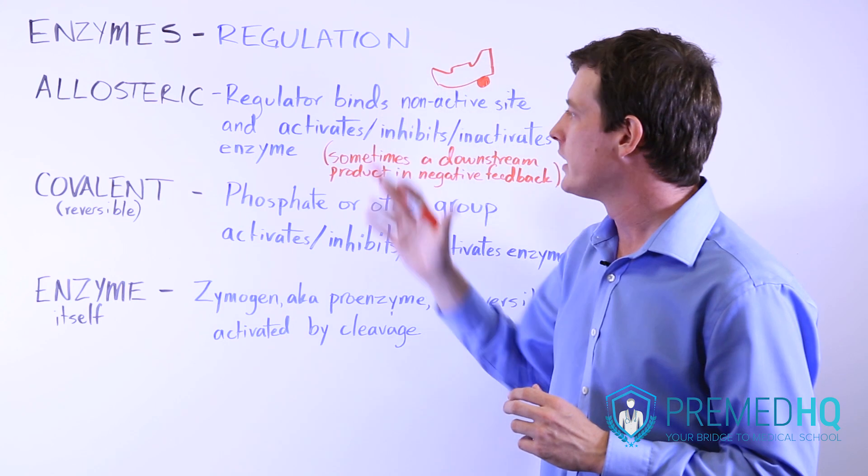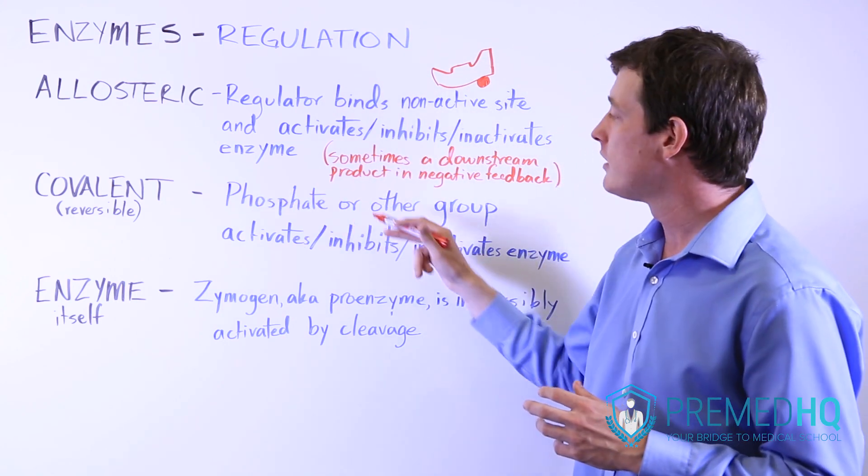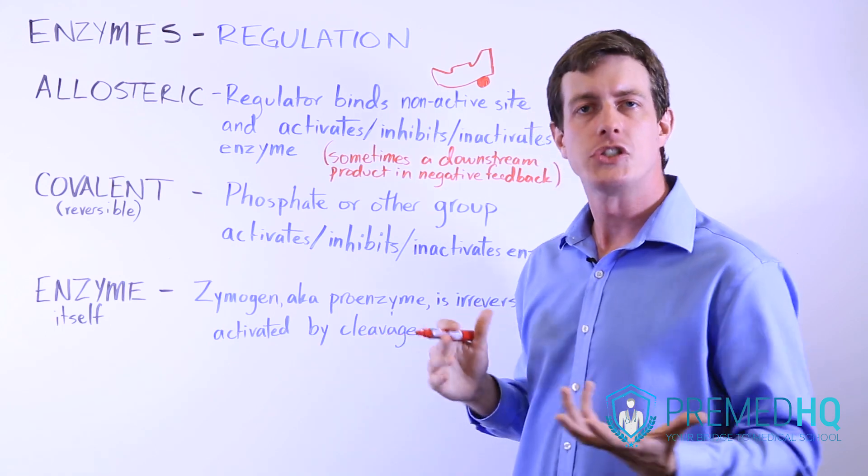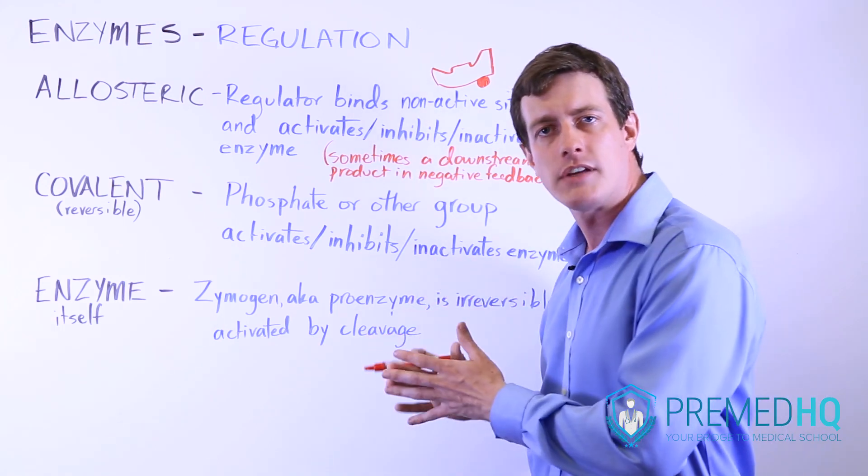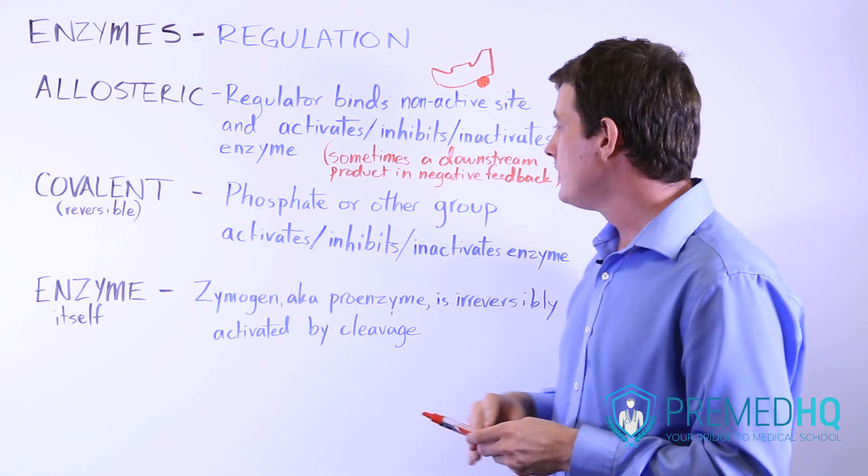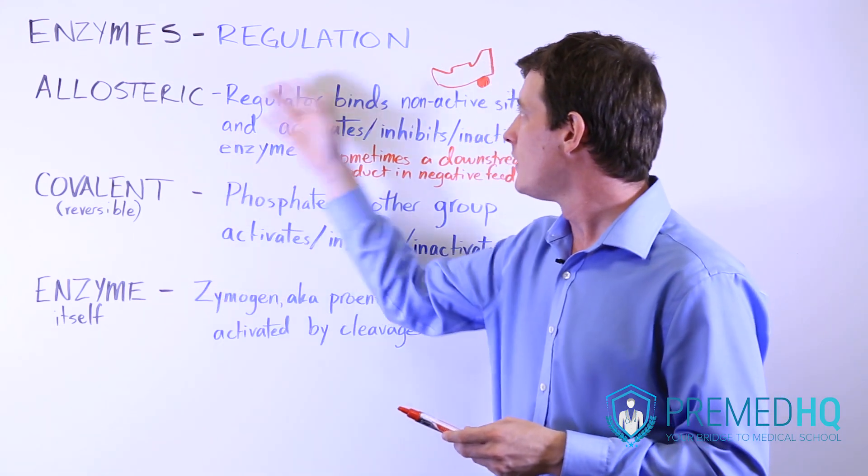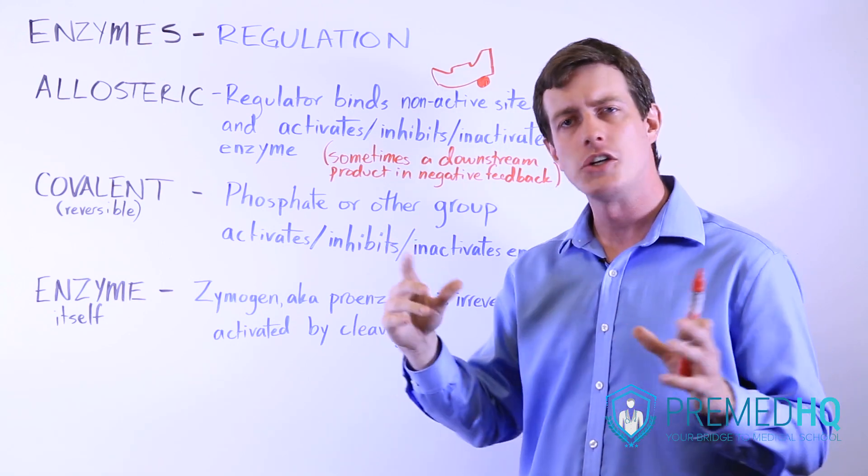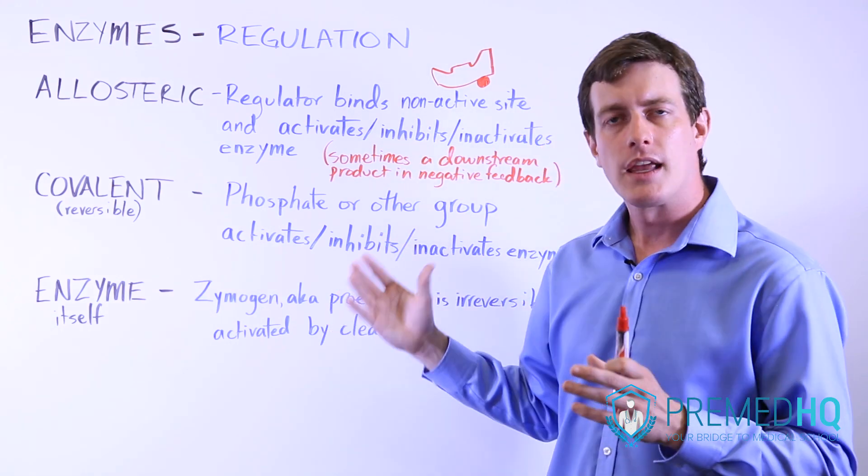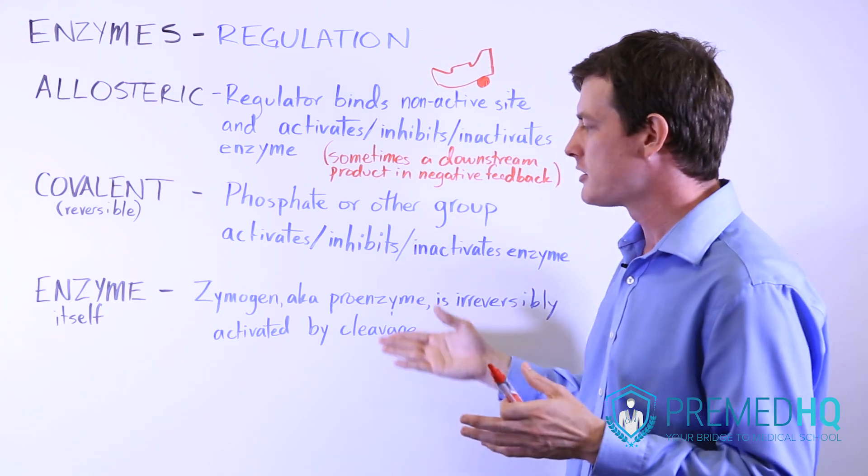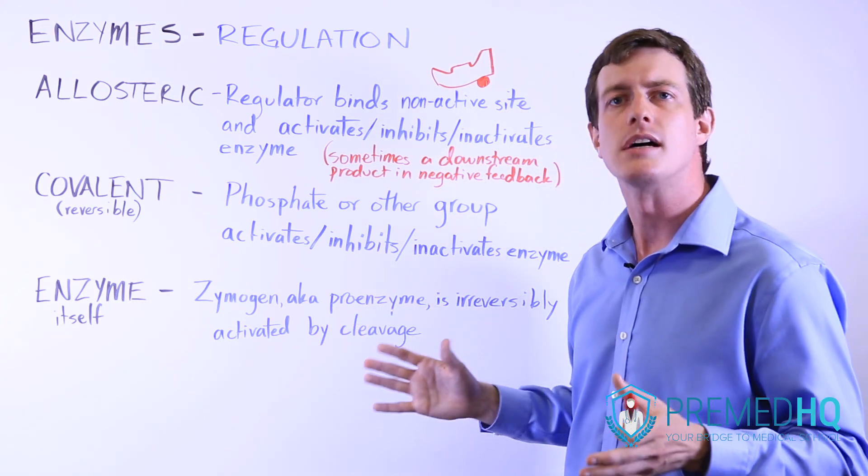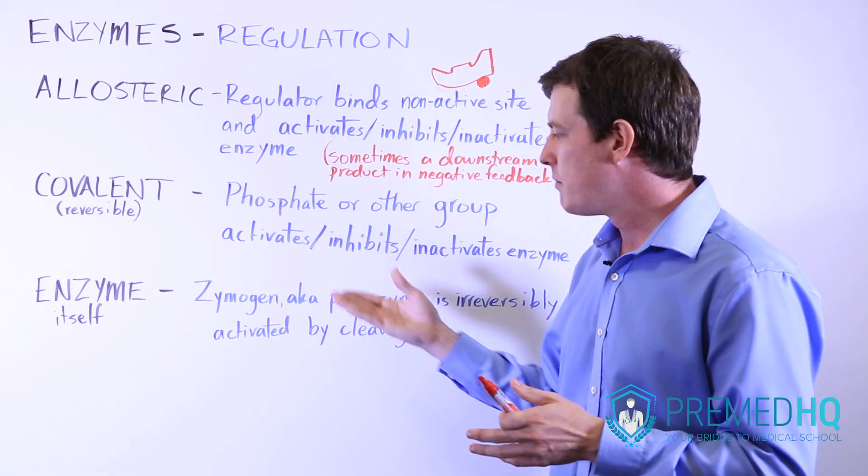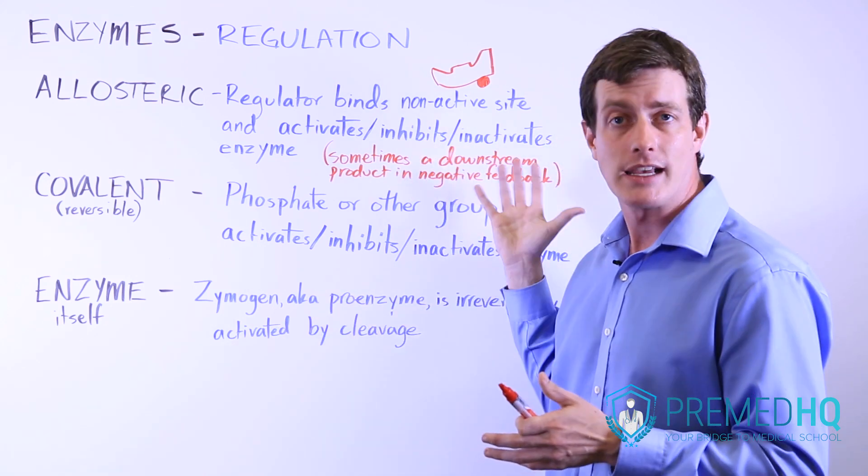Covalent enzyme regulation is usually involving phosphate groups, and when the phosphate group is attached to that enzyme, then it either becomes activated or inactivated. And then the enzyme itself can be involved in regulation. If it's secreted as a zymogen, a large inactive form, then it can be cleaved by some conditions, for example, the acid in the stomach into its active form and then function by performing its enzymatic catalysis.